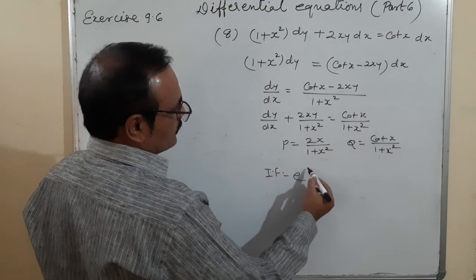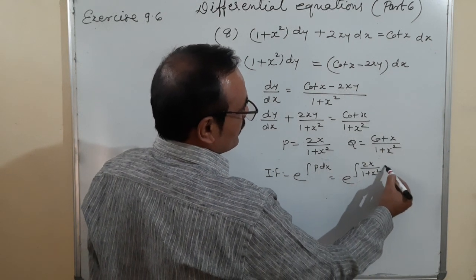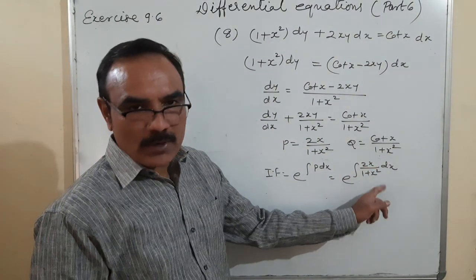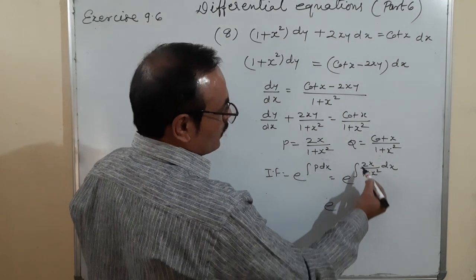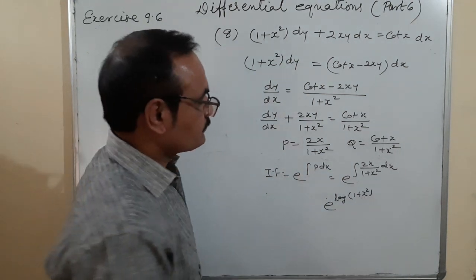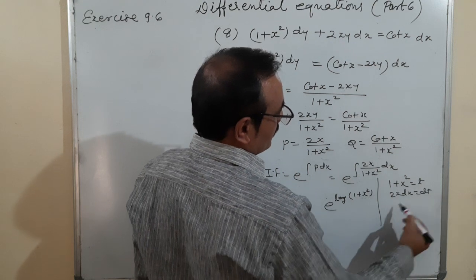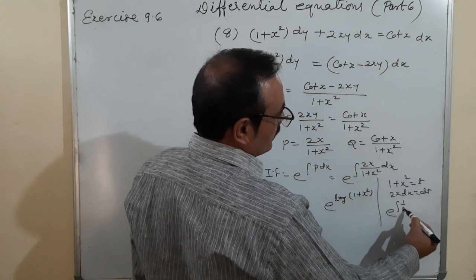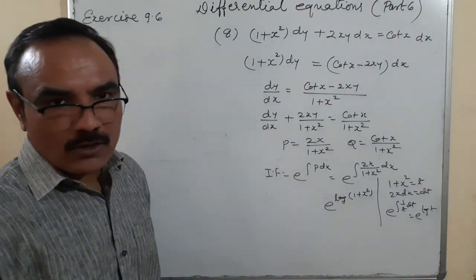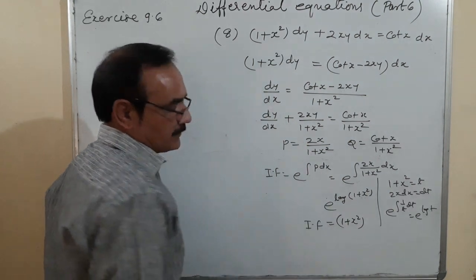Finding the integrating factor: e^(∫2x/(1+x²)dx). Let 1 + x² = t, so 2x dx = dt, giving ∫(1/t)dt = log t = log(1 + x²). Therefore e^(log(1+x²)) = 1 + x². The integrating factor is (1 + x²).